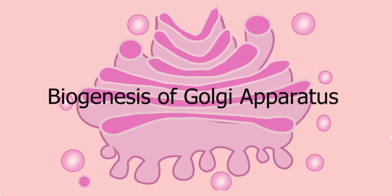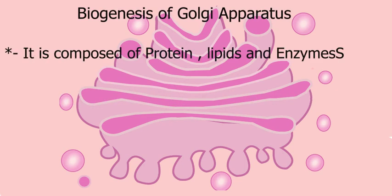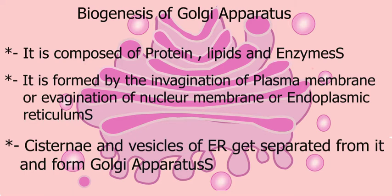Biogenesis of Golgi apparatus: it is composed of proteins, lipids, and enzymes. It is formed by the invagination of plasma membrane, or it may be formed by the evagination of nuclear membrane or endoplasmic reticulum. The cisternae and vesicles of endoplasmic reticulum get separated from them under some conditions and form Golgi apparatus.